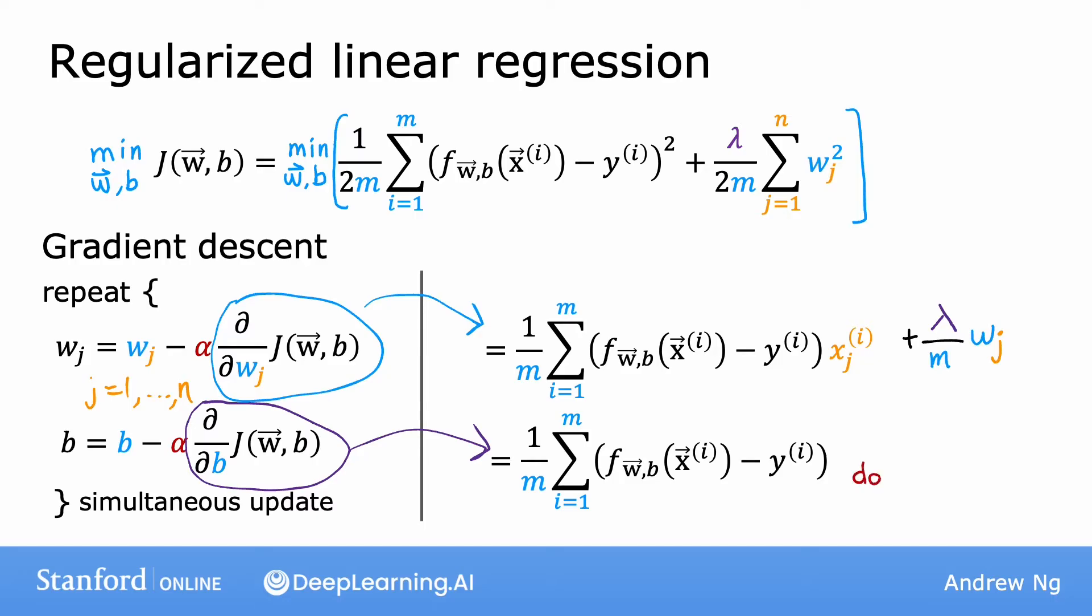Recall that we don't regularize b, so we're not trying to shrink b. That's why the update to b remains the same as before, whereas the update to w changes because the regularization term causes us to try to shrink w_j.